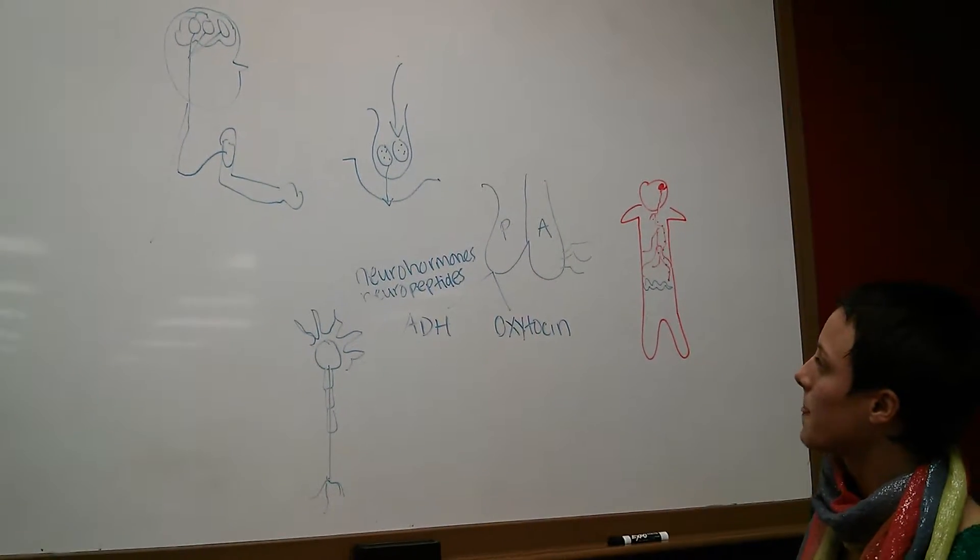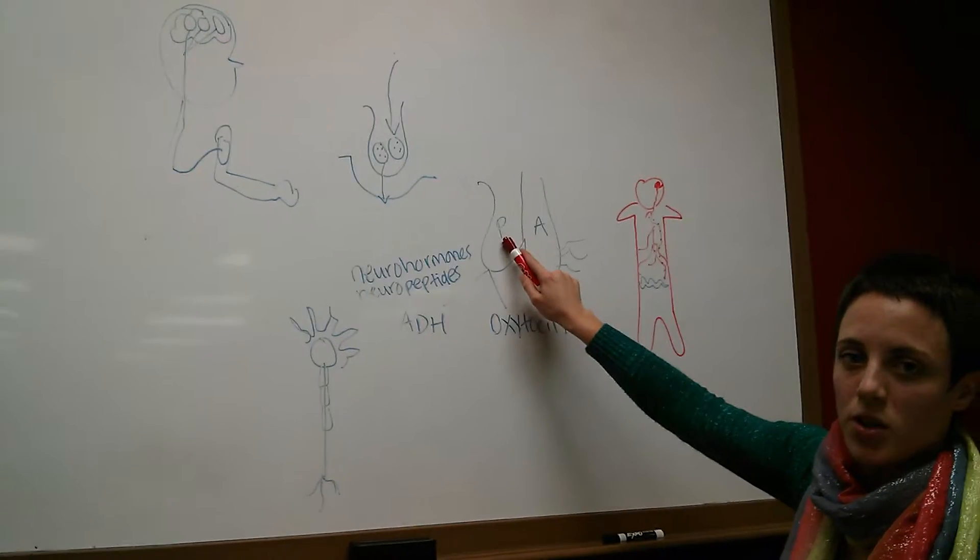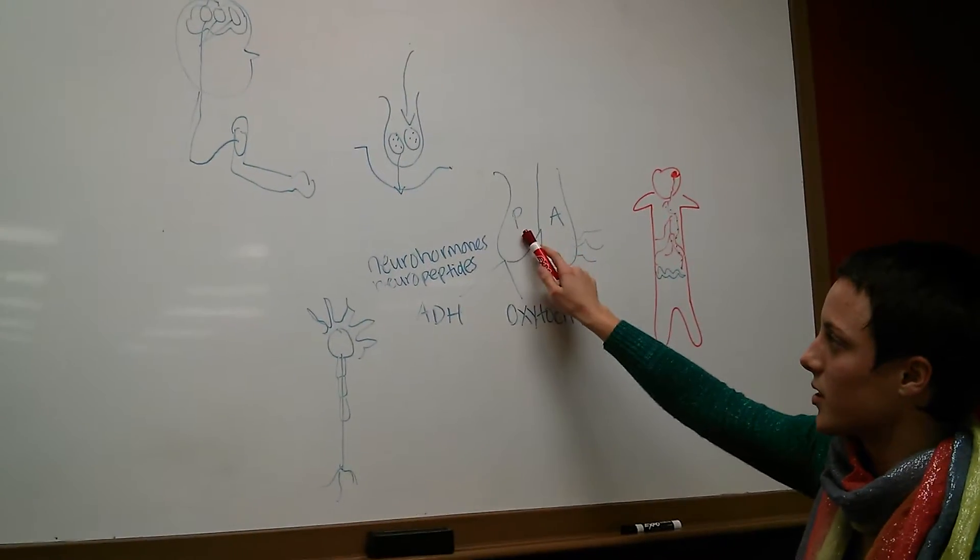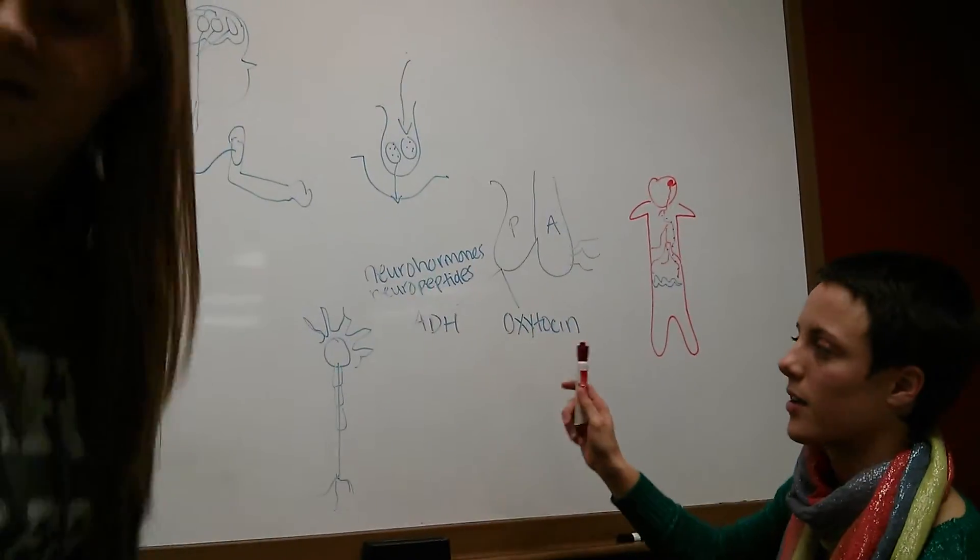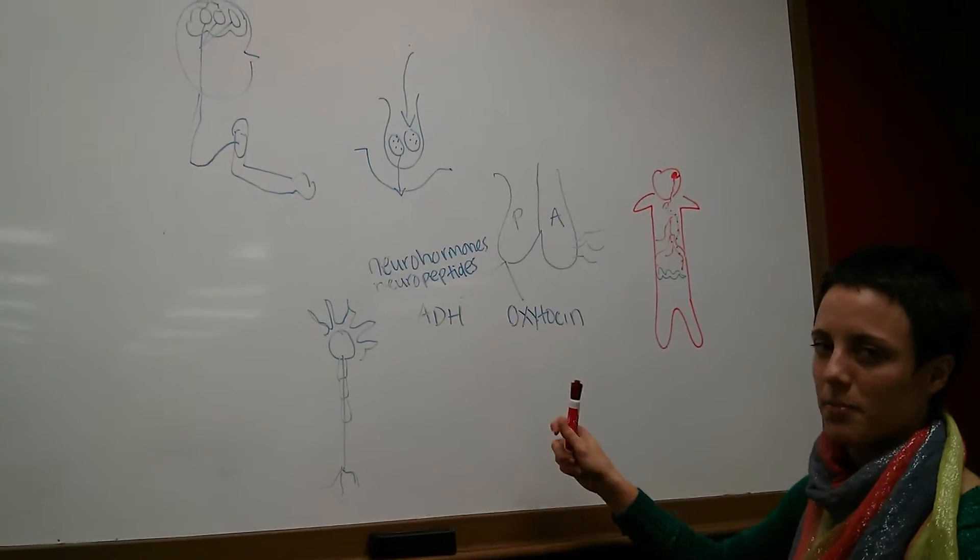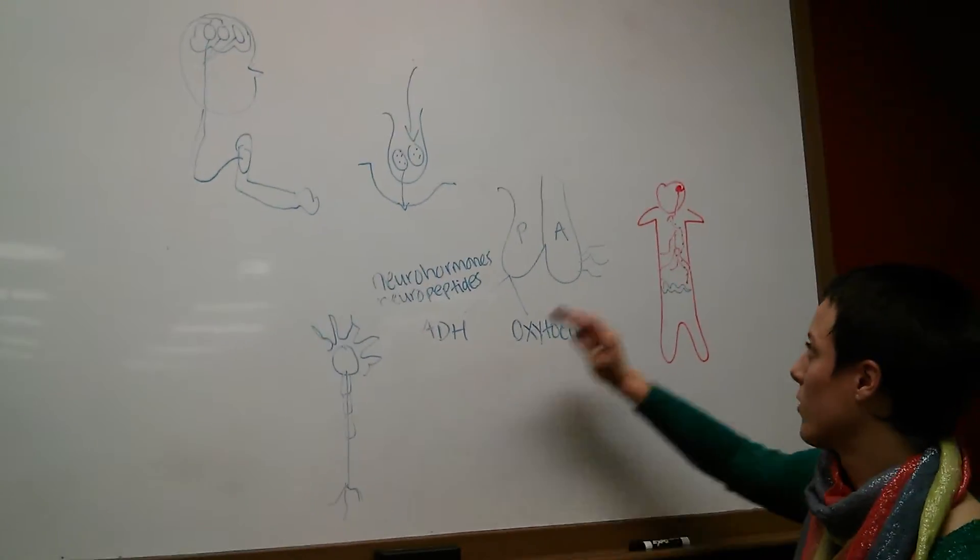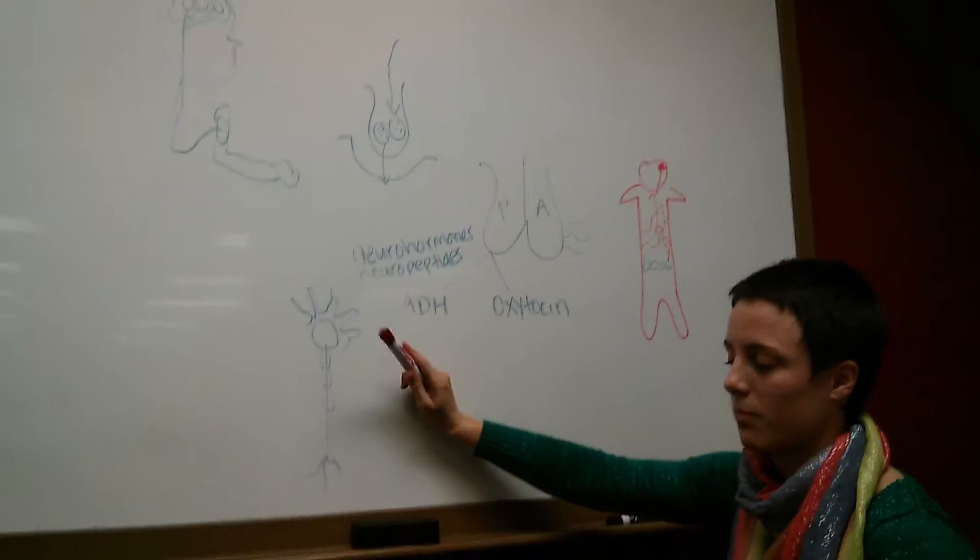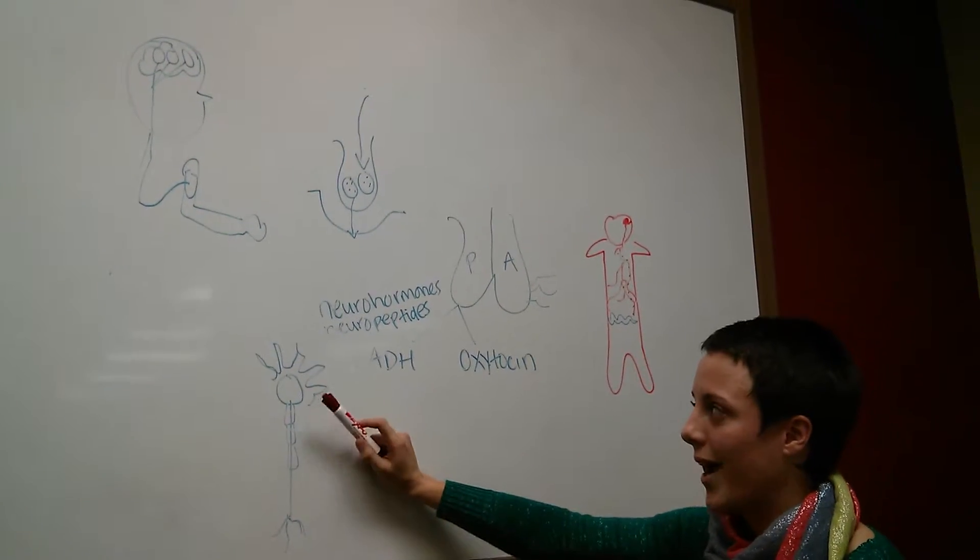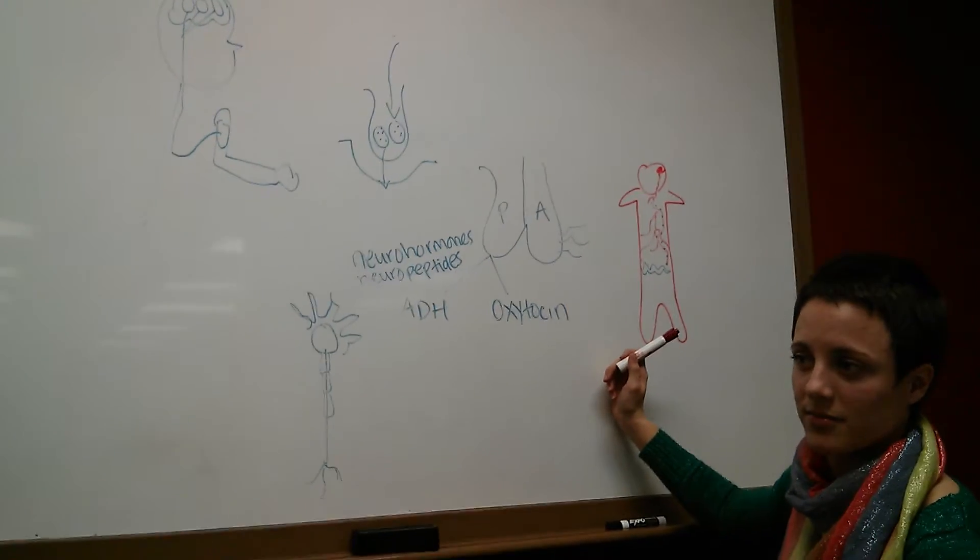Same thing. So, the pituitary, the posterior portion of the pituitary gland secretes neurotransmitters, which are called, in this case, neurohormones, because there's a specific exception when a neuron here secretes a neurotransmitter that actually travels through the bloodstream. So, in this case, the neurotransmitter secreted by the neuron is going to act like a hormone, which means it goes through the bloodstream. Does that make sense? Mm-hmm. Okay.